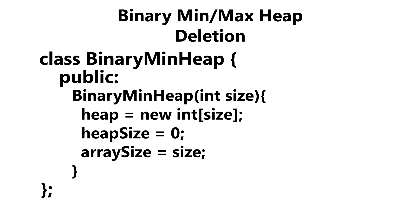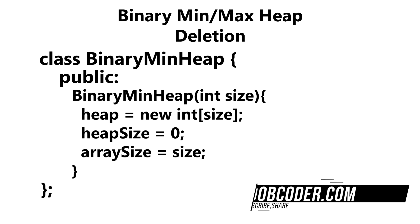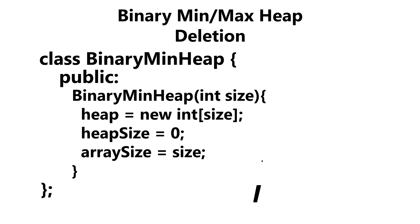Moving on to our one argument constructor, we get passed in size, which is the size of our array. We then use that size to dynamically create our array. We then set our heap size to zero, since there are zero elements within our array, and we initialize our array size to the size that was passed in.